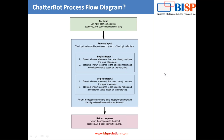Apart from speech, we have consoles where we type a message and get a response from the other end. We are passing messages to the console and the background logic — some process units — will be executed at the background. There are some prebuilt messages already configured, and based on your input, the chatbot will automatically search for the appropriate response and return the response from the logical adapter that generates the highest confidence value. The return response will be in the console, an API, or speech synthesis.